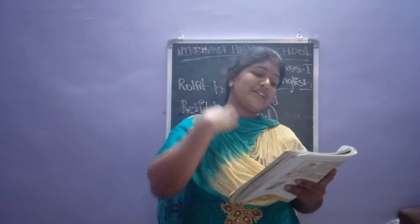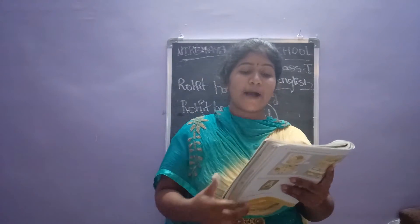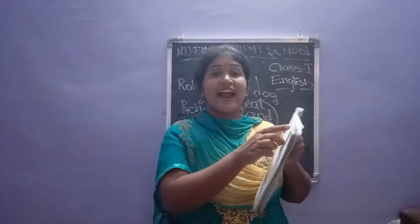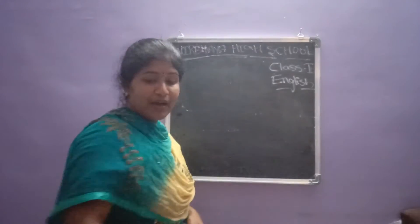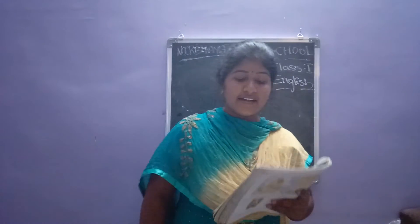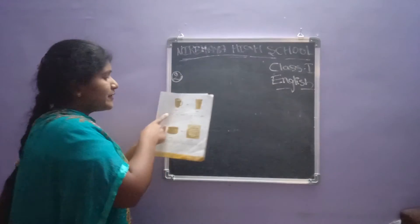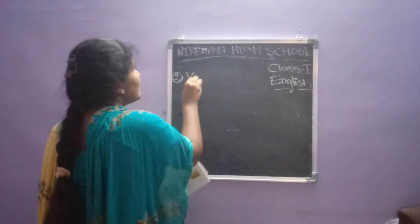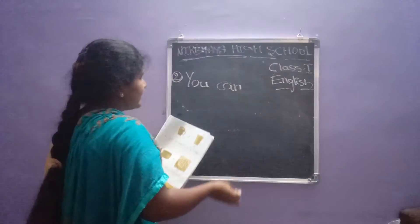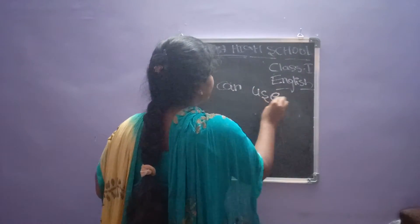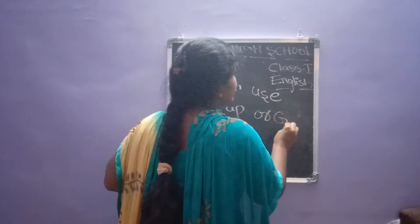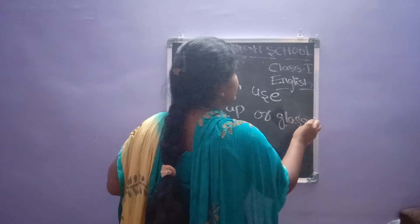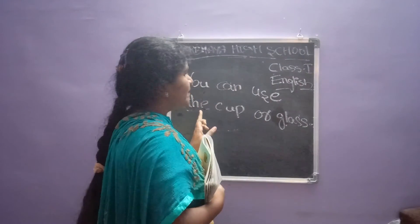See the second one. He already completed the first one. The words are: cup or glass. By using these words we can make the sentence: 'You can use the cup or glass.' Y-O-U, you — write in capital letter. You can use the cup — O-R — G-L-A-S-S, glass. Full stop. You can use the cup or glass.